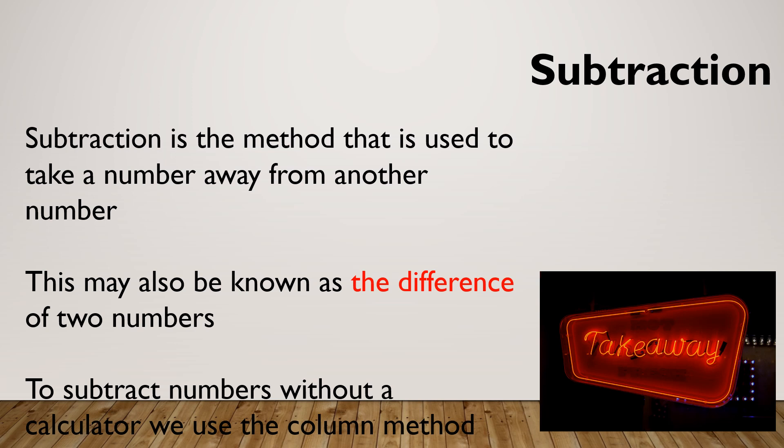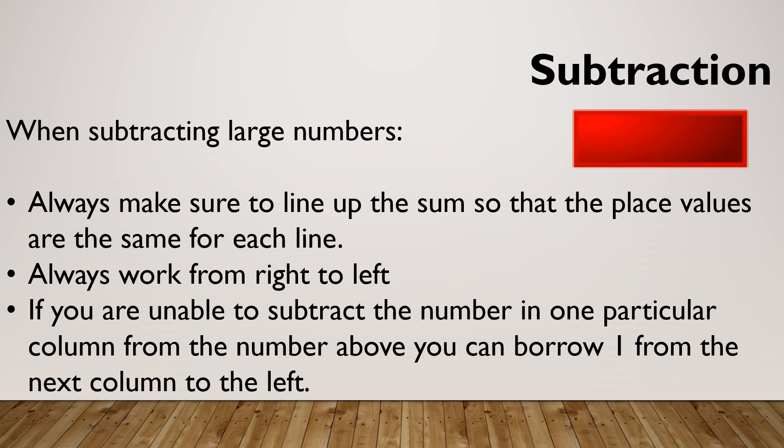Subtraction is the method we use to take one number away from the other, the difference. We use the column method, same as we did for addition. When we're doing subtraction with large numbers, we need to make sure we've lined the sum up properly so the place values are in line. We've got our ones above our ones, our tens above our tens, our hundreds above our hundreds. We always start at the right and work our way to the left. And if we're unable to subtract the number in one particular column, we can borrow one from the next column to the left.